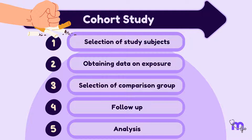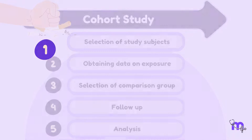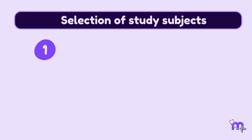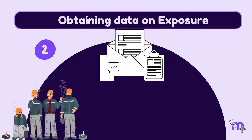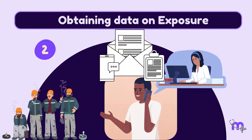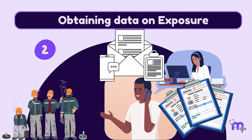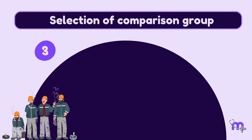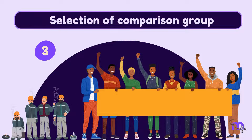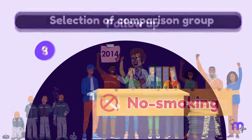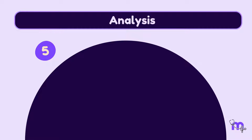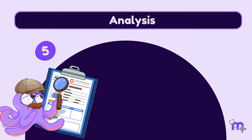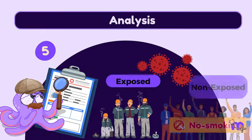Let's understand the five-step approach I use to conduct a cohort study on smokers. Step one: select my study population — in this case, a cohort of smokers. Step two: obtain data on exposure by collecting data from personal interviews, mailed questionnaires, and hospital records. Step three: select a comparison group — I compare the cohort of smokers with a cohort of non-smokers. Step four: follow-up by periodic examinations or telephone calls, which may go on for years or even decades. Step five: analyze all the collected data and determine if the disease occurred in both the exposed and non-exposed groups.